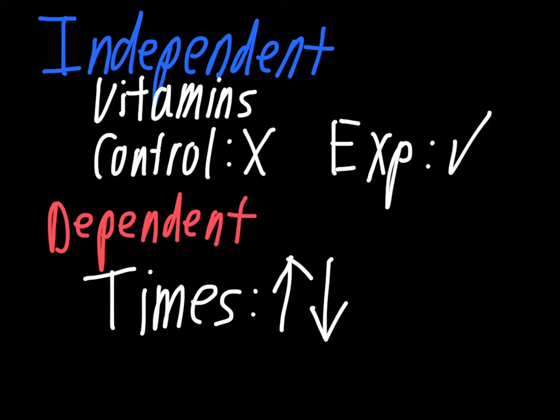So if we have somebody who's in the experimental group who's getting the vitamins, and their time is going down, that's evidence that the vitamins help the runner. If we have somebody that's in the experimental group and their time is going up, then that's evidence that maybe vitamins actually hurt the runners. They don't make them better.